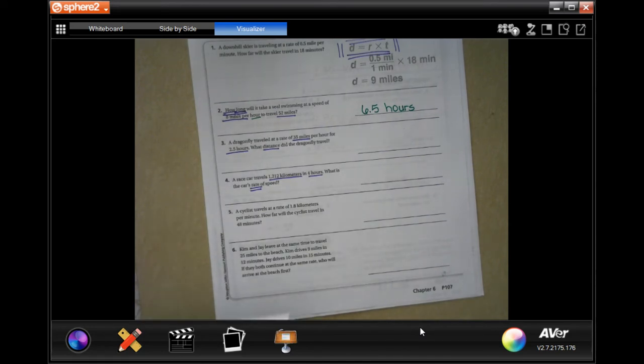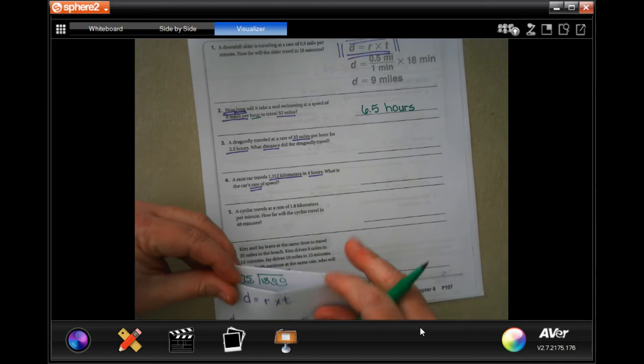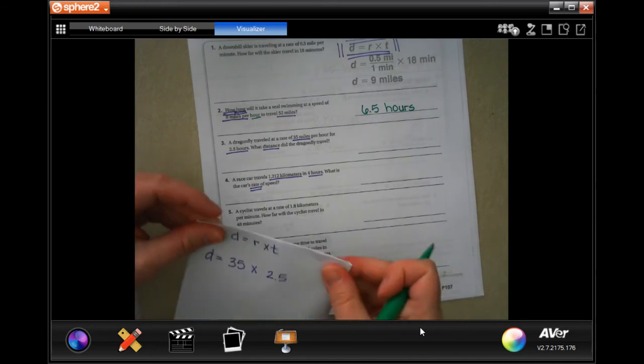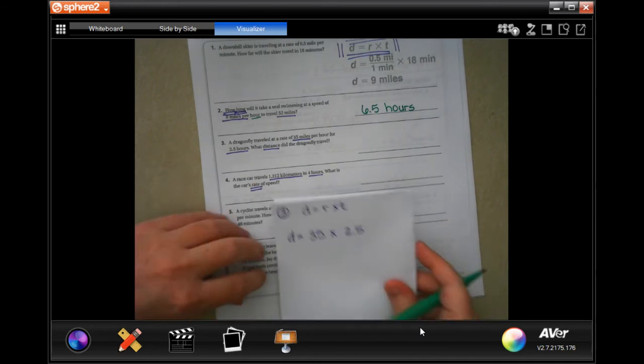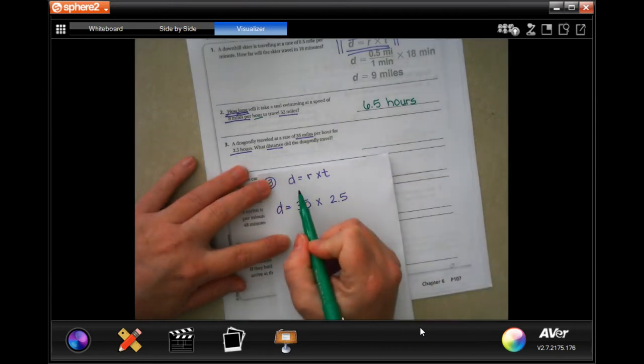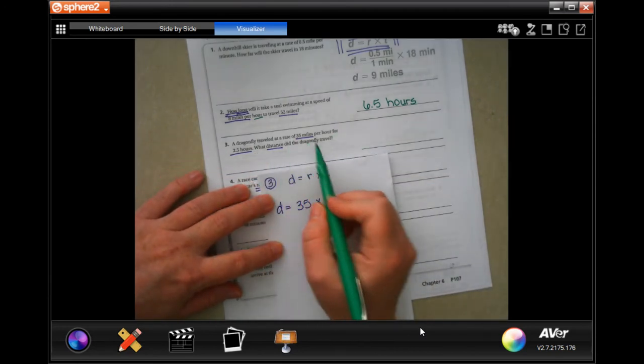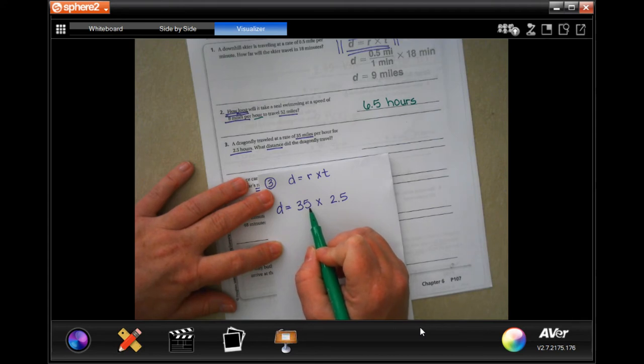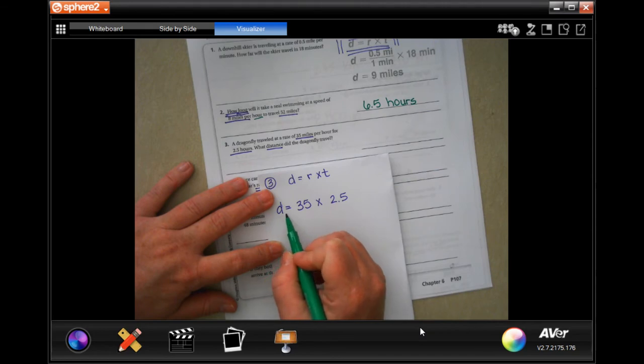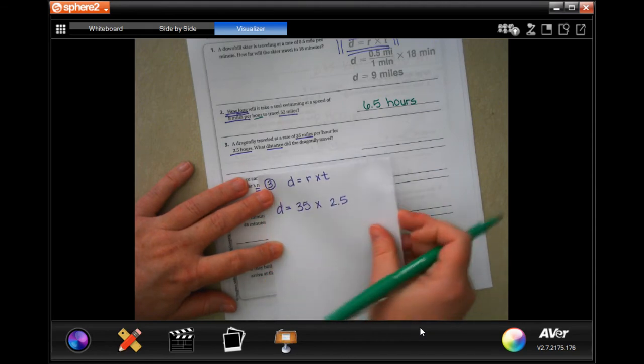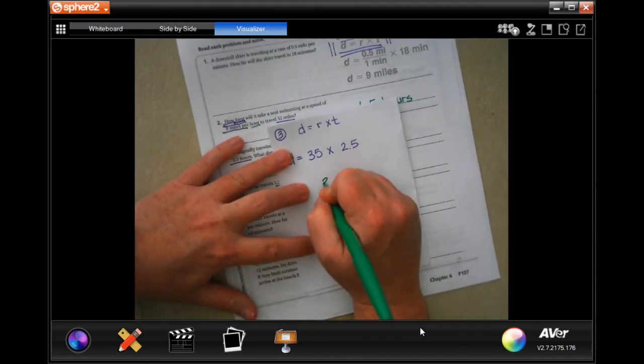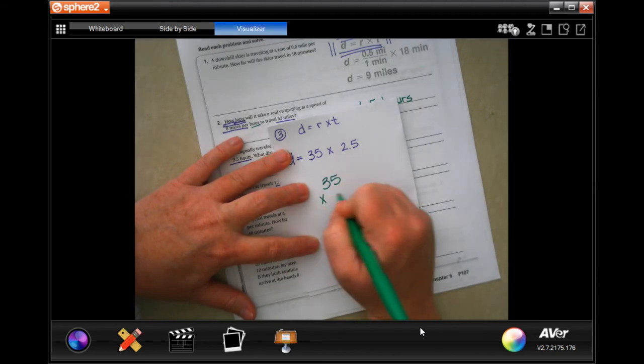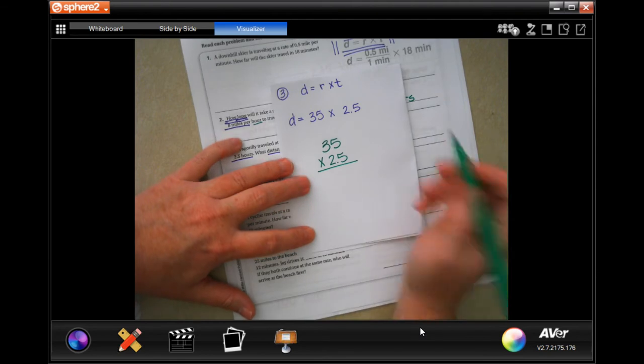We're going to do number 3. Again, I wrote that formula at the top of my chart. A dragonfly traveled at a rate, so it's telling us the rate is 35 miles per hour, for 2.5 hours. So, what distance will the dragonfly travel? We need to find the distance. So, we just need to do 35 times 2.5 and find the answer.